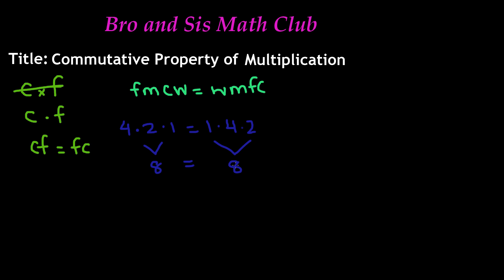As you can see, the only thing about the commutative property of multiplication and addition is that as long as the terms are the same, it doesn't matter which way you're rearranging it. It doesn't matter which way you're putting the terms, whether it's the variable or the actual number, you're still going to get the same answer.